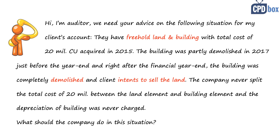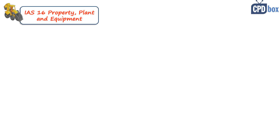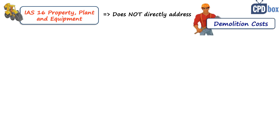This is a question I've come across many times, and many companies face more or less the same issue, just slightly twisted. Let's start with properties for own use under IAS 16 Property, Plant and Equipment, beginning with demolition cost, because that's easier. IAS 16 deals with what you can and cannot capitalize, but it does not directly address the demolition or removal of obstacles.